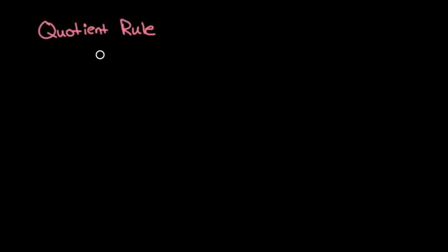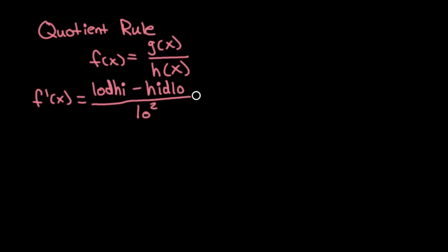Next up is the quotient rule. And this is the rule we use when we have one function divided by another function. And here, f'(x) would equal low d high minus high d low over low squared. You're like, what? What's that?